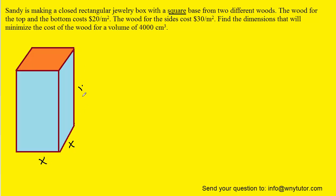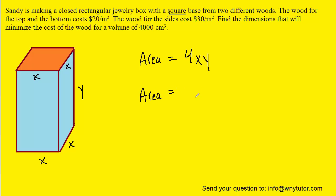We want to figure out an expression for the area of the four sides of the box. The front side has an area of X multiplied by Y, and since all sides are identical, the area of the four sides is 4XY. The top and bottom have dimensions of X times X, which is X squared, so the area of the top and bottom is 2X squared — the factor of 2 accounts for both top and bottom.